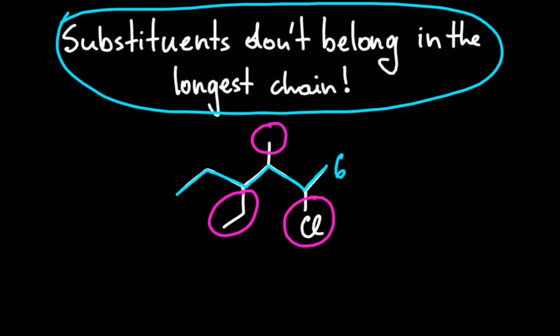As you can see we have different substituents here: chlorine atom, CH3 group, and CH3-CH2 group.